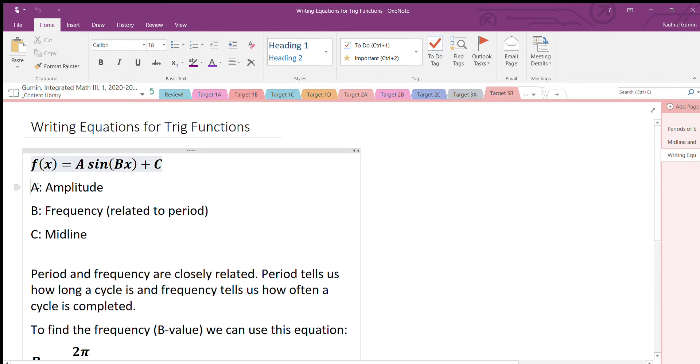In these equations, A stands for amplitude, B stands for frequency, which is related to the period we learned about, and I have a beautiful equation for that for you, and C is our midline.